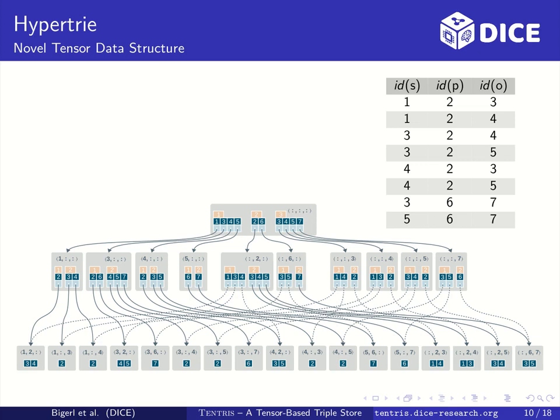This makes slicing the root node by any dimension efficient. Also iterating non-zero slices can be accomplished efficiently. The nodes on the second level encode order 2 tensors in the same way. Thus, the properties of depth 3 nodes also apply to them.